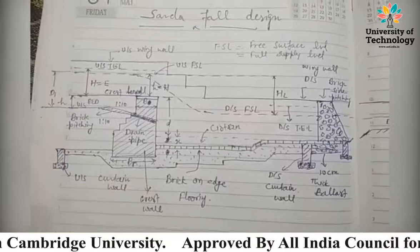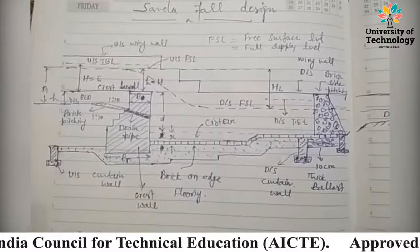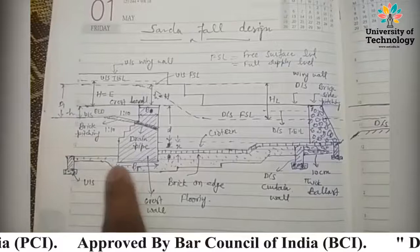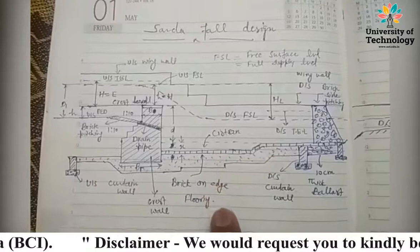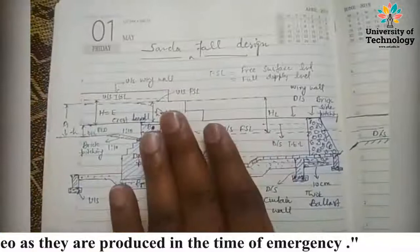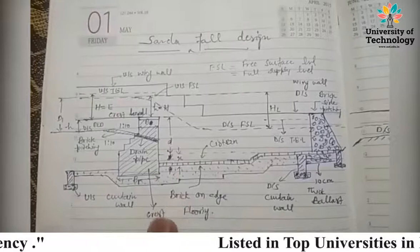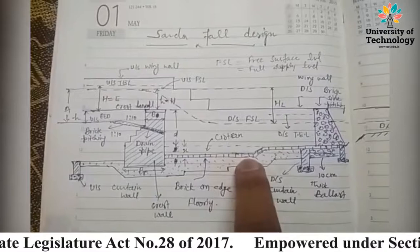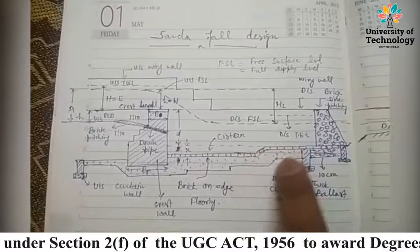This is the cross-section diagram of a canal system having a Sarda fall. In this Sarda fall, this is the upstream curtain wall. The bottom part is at the bottom surface of the canal, which we can call the bed level. At this bed level there is a curtain wall — the upstream curtain wall. This portion is the upstream side, and this is the downstream side below the crest wall.